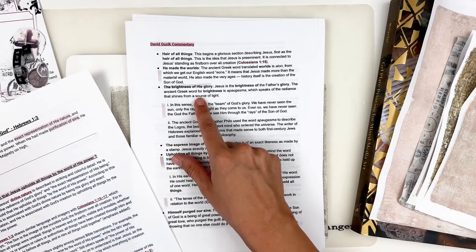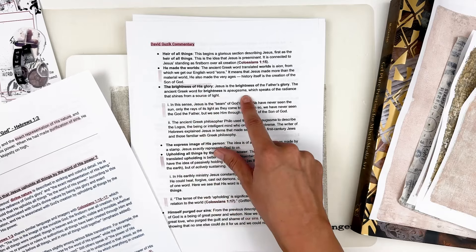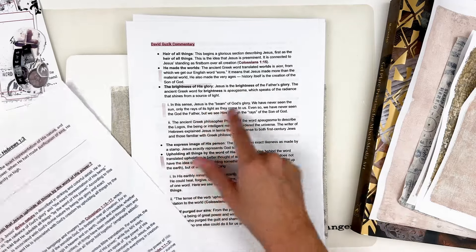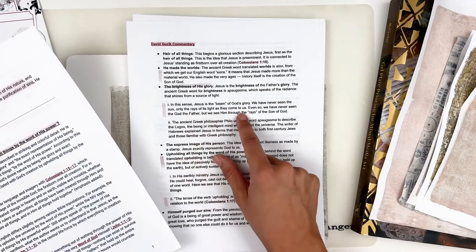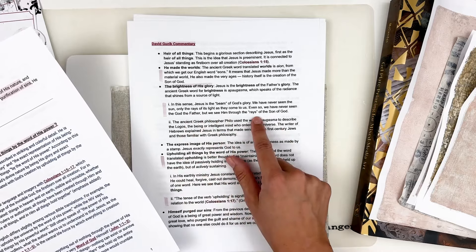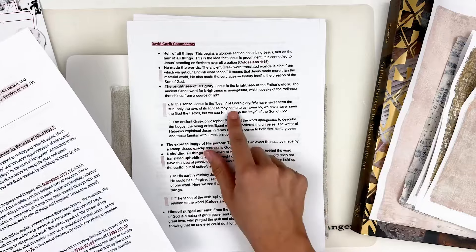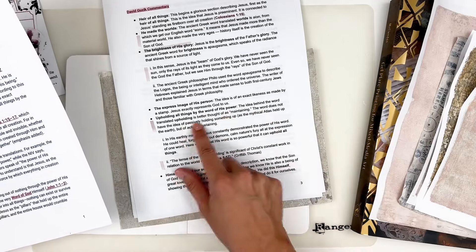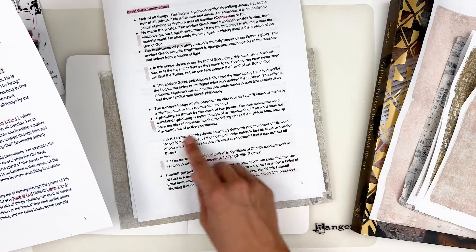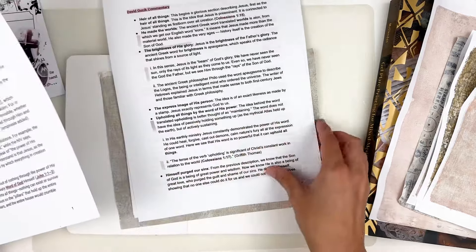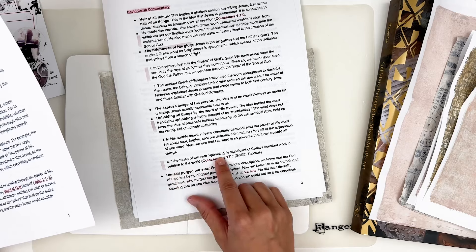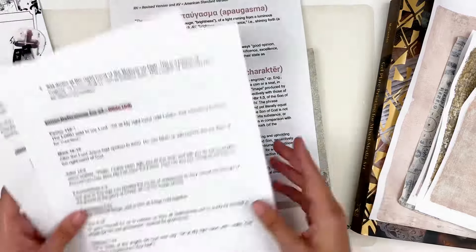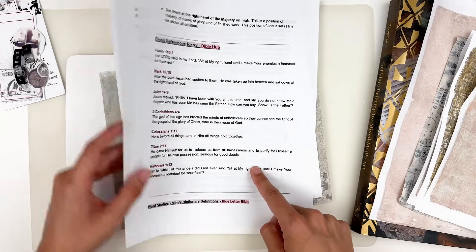The brightness of his glory. Jesus is the brightness of the father's glory, the ancient Greek word for brightness, which speaks of the radiance that shines from a source of light. So I did include that word as a word study for you guys. It says in this sense, Jesus is the beam of God's glory. We've never seen the son, only the rays of his light as they come to us. Even so we've never seen the God of the God, the father, but we see him through the rays of the son of God. Upholding all things by the word of his power. The idea behind the word translated upholding is better thought of as maintaining. The word does not have the idea of passively holding something up, but of actively sustaining. The tense of the verb upholding is significant of Christ's constant work in relation to the world.